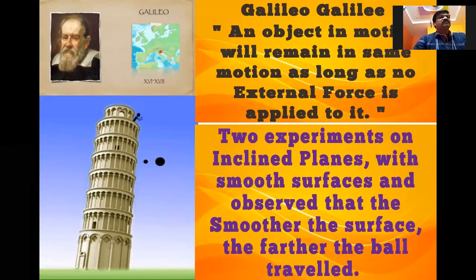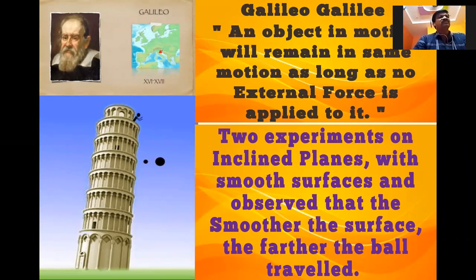If you leave an object by itself, it will come to rest. If you start pedaling a bicycle, it will gradually slow down and eventually come to rest. In this way, Aristotle explains the state of an object. After that, the scientist Galileo conducted experiments by dropping objects from heights of buildings and observed many moving objects. He states that an object in motion will remain in the same motion as long as no external force is applied to it.